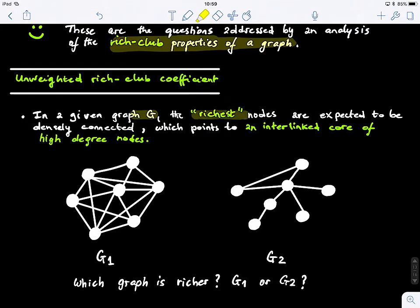For example, here, what do we have? We have an unweighted graph G, and the definition of the richest node. So basically, they are defined as the densely connected nodes in the graph, which points to an interlinked core of high degree nodes. So when we detect a rich club, it's a core, right. But the nodes within this core are hubs in the network, but they're extremely highly interconnected. Which means, these hubs, they communicate a lot.